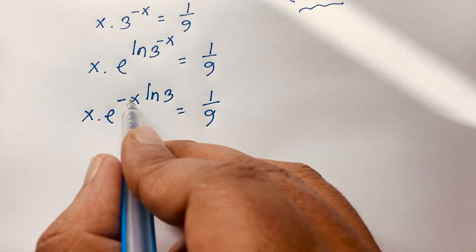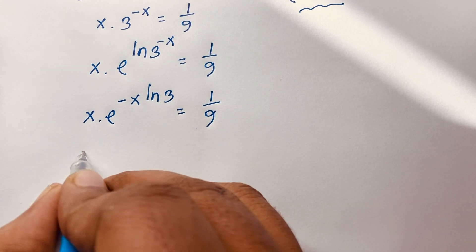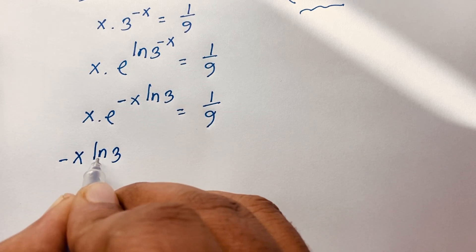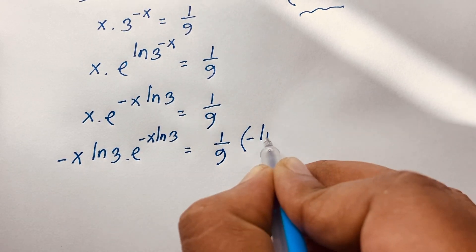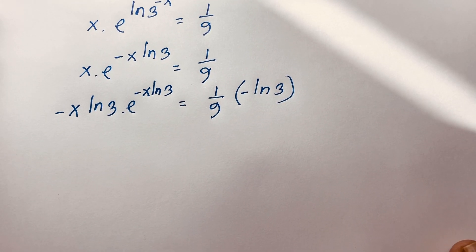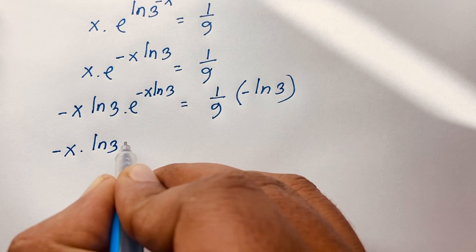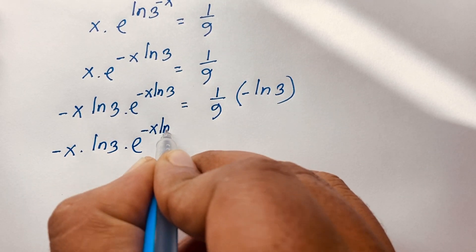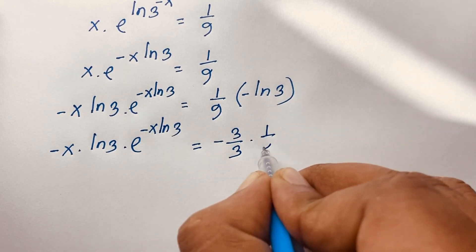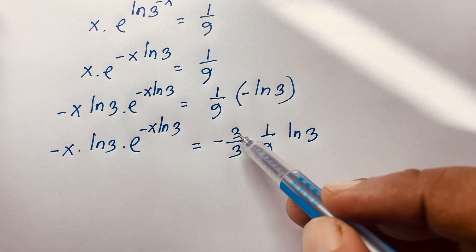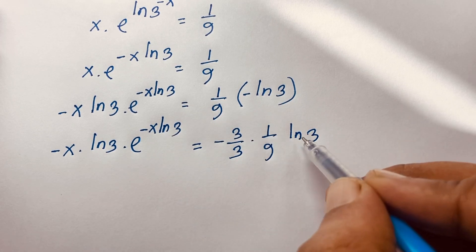Now, here we have negative x in the exponent but positive x outside. To match the Lambert W function form, I multiply both sides by negative ln 3. This gives: negative x ln 3 times e to the power negative x ln 3 is equal to negative ln 3 over 9.